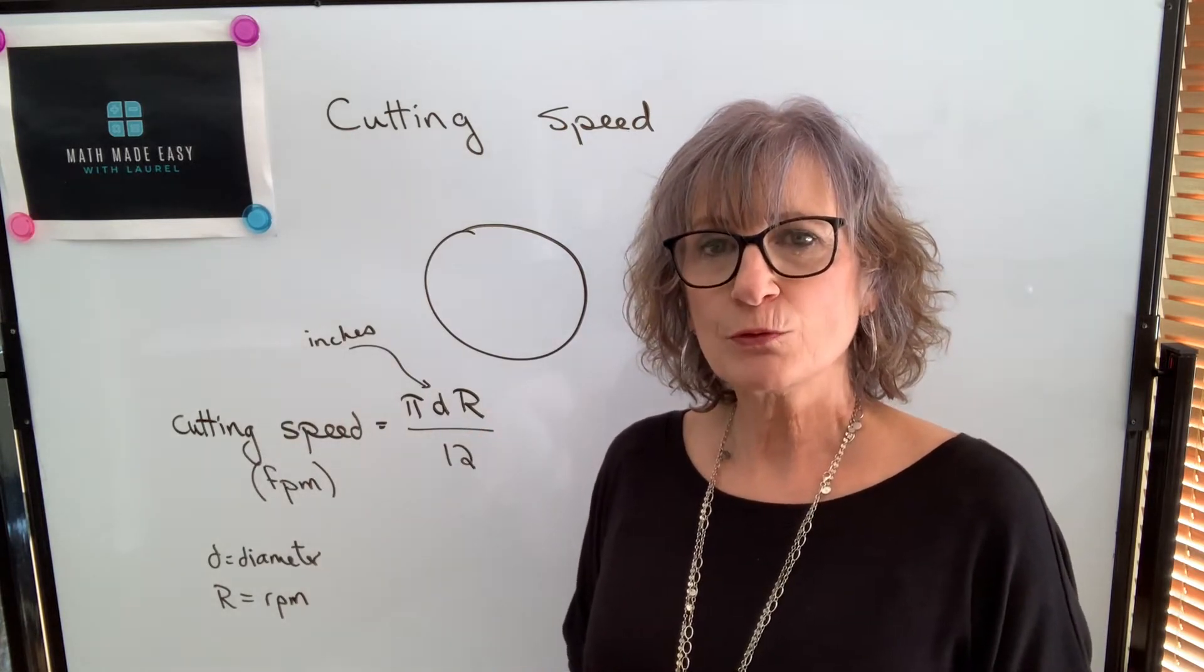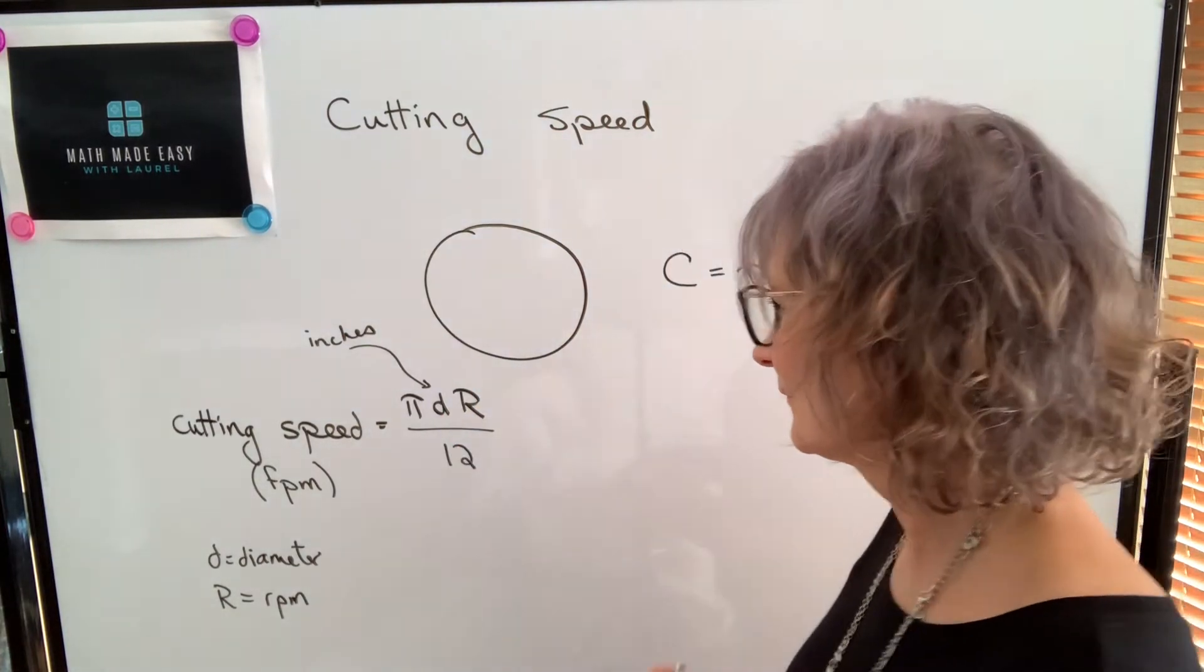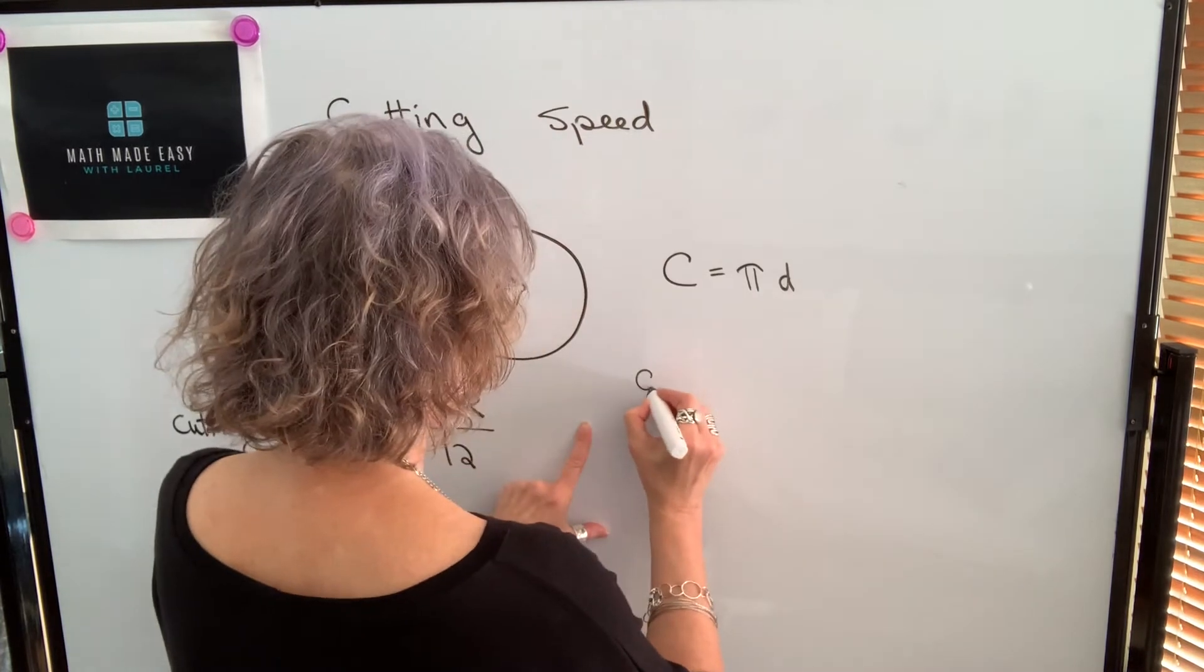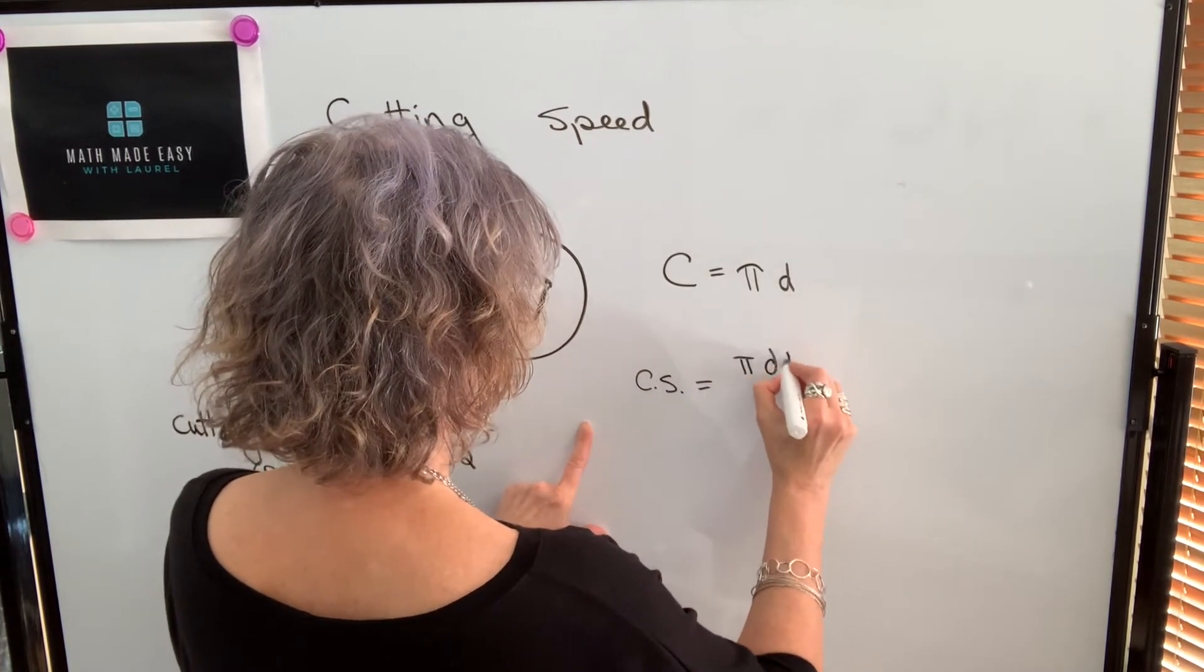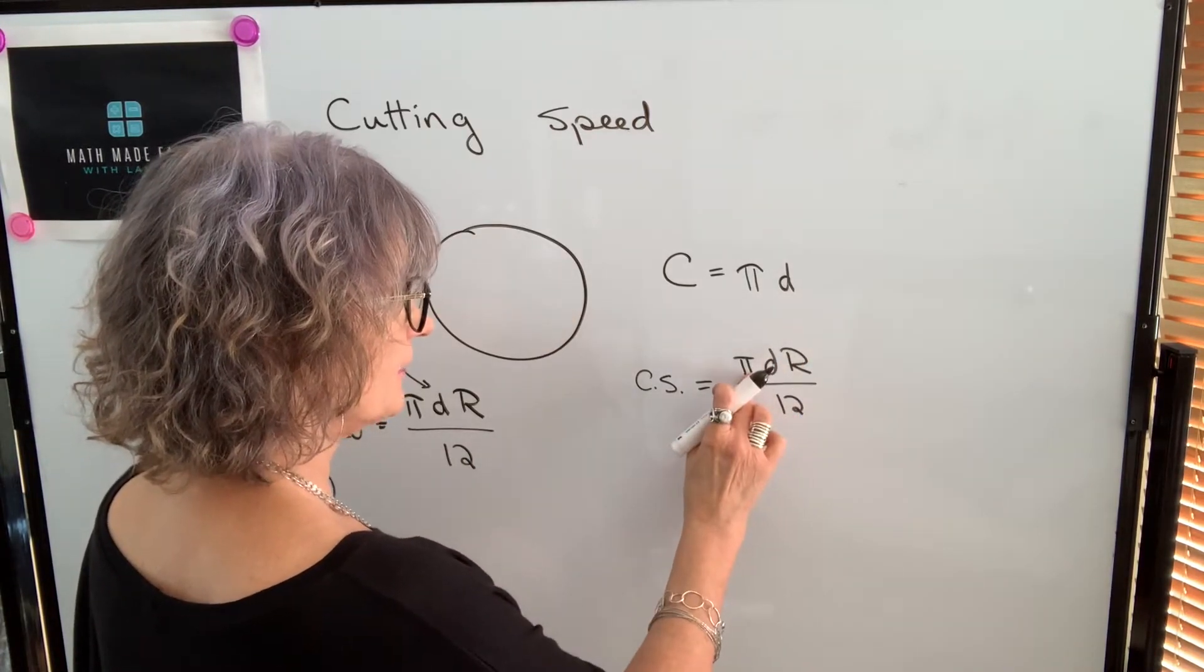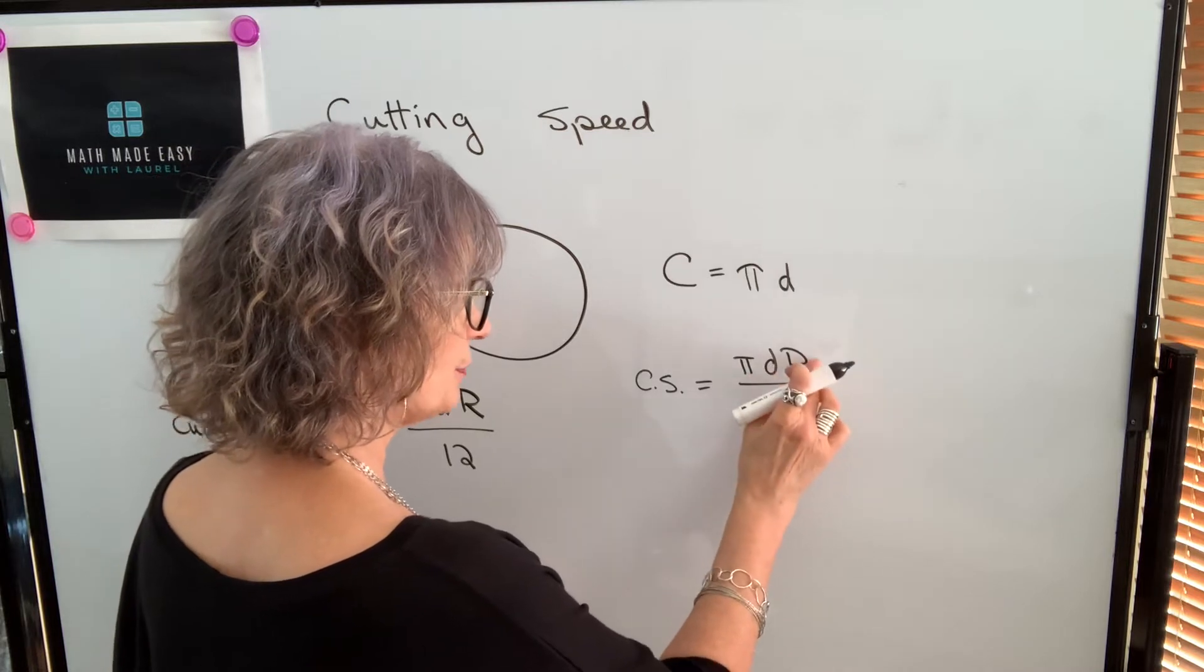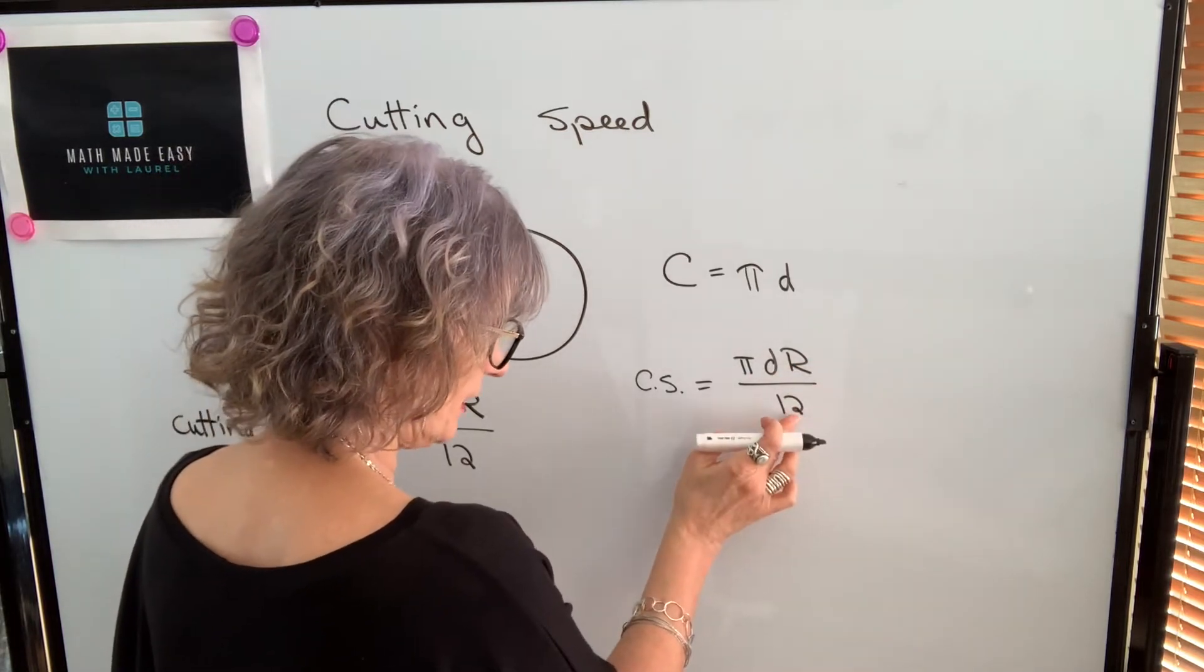So if we were to rearrange this formula and isolate r, our cutting speed is equal to π times d times r divided by 12.